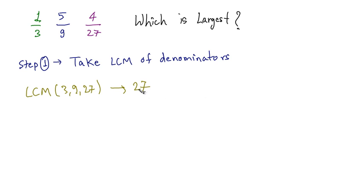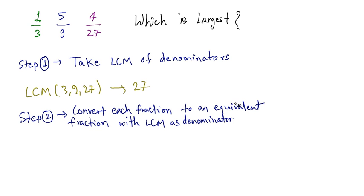So 27 is the LCM of these three denominators. Now the second step is convert each fraction to an equivalent fraction with LCM as the denominator. So we have to convert all of these three fractions to an equivalent fraction with 27 as the denominator.